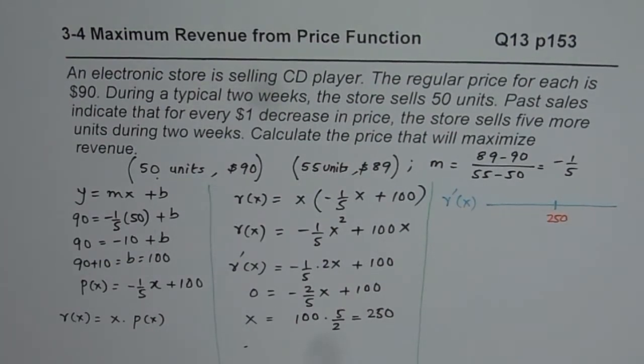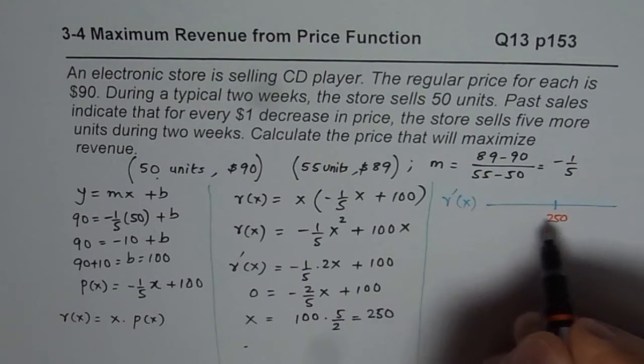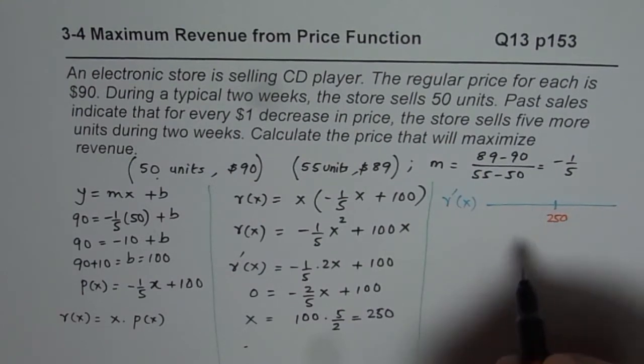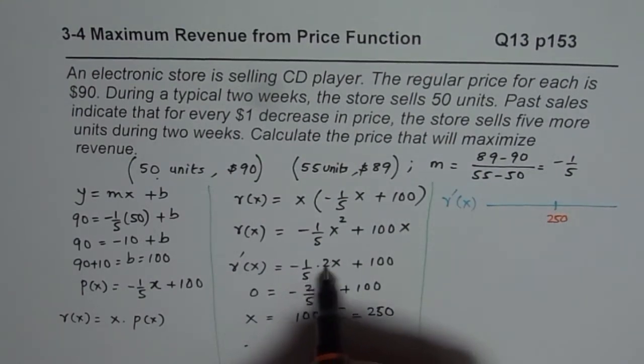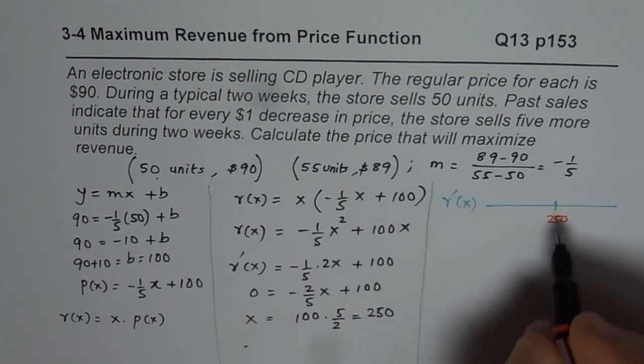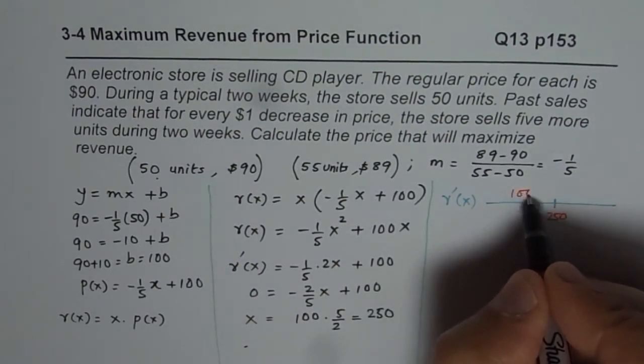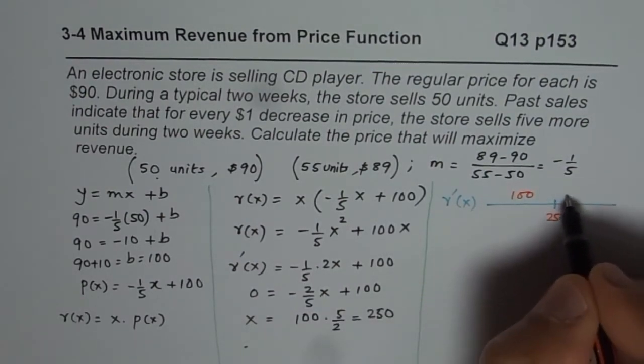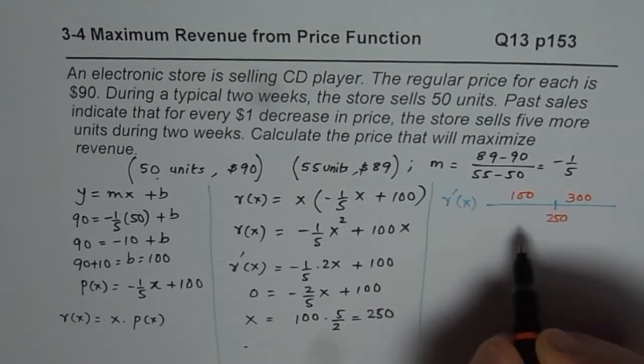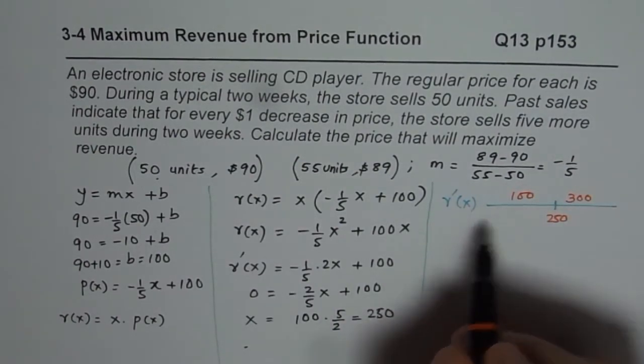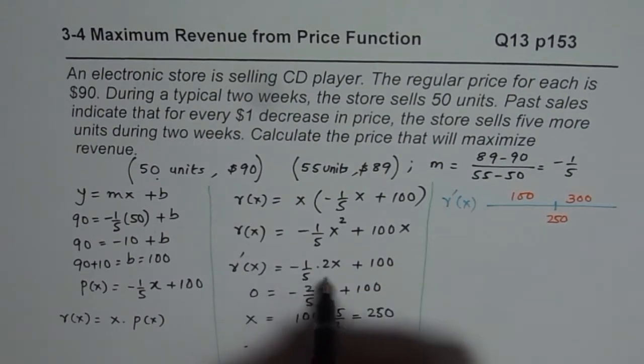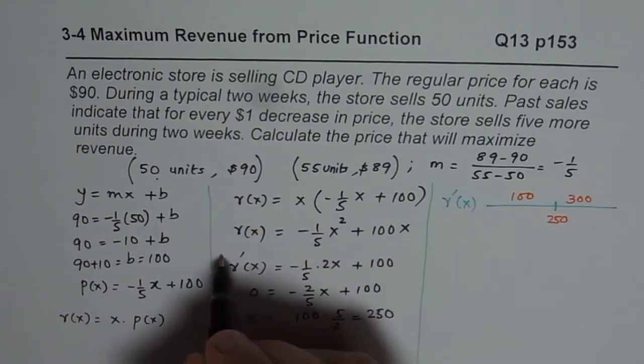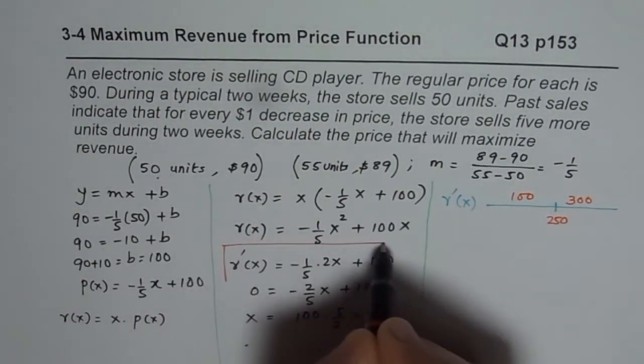So we'll take a test point on the left side, which is less than 250. So since the function is this, I'll take multiple of 5. Let us take 100 here, and let us take 300 on this side. Now, if I substitute 100 in my revenue function, derivative function of the revenue, which is this one.